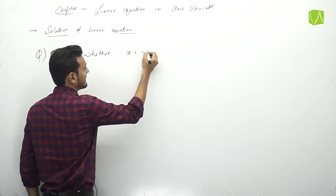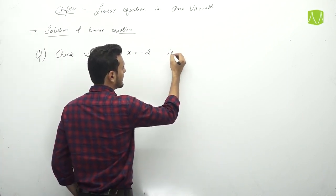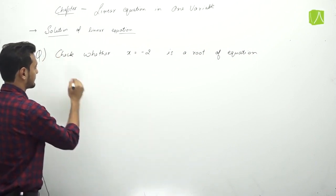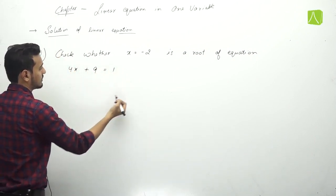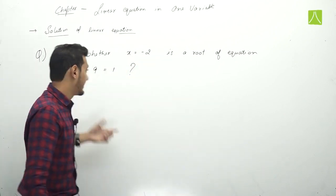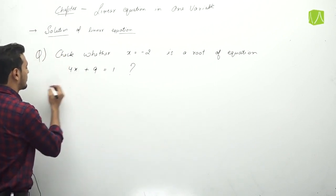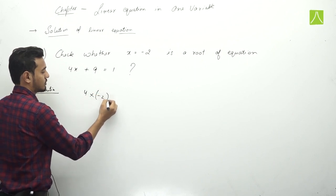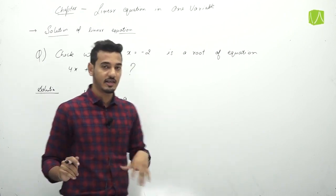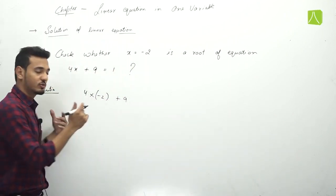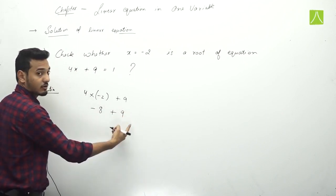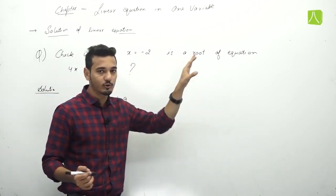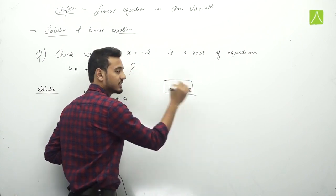Next: verify that x equals to minus 2 is a root of equation 4x plus 9 equals to 1. x की value minus 2 है। तो 4 into minus 2 plus 9 — left hand side solve करते हैं। 4 into minus 2 is minus 8. Minus 8 plus 9 is 1. Left hand side = 1, right hand side = 1 — equal! So x equals to minus 2 is a root of this equation।